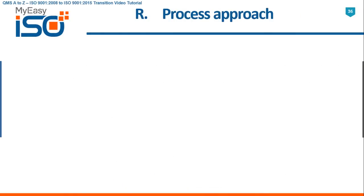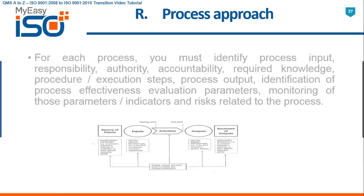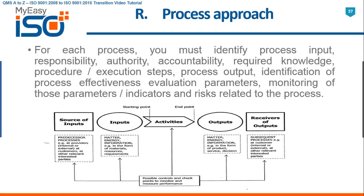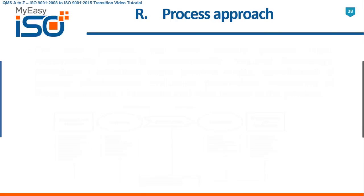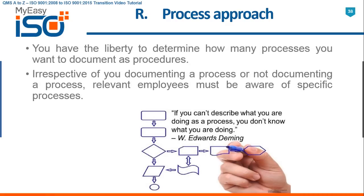R. Process Approach. Ensure you implement process approach effectively. In ISO 9001 2015 QMS, process-based management gets more prominence with the identification of processes in the organization. For each process, you must identify process input, responsibility, authority, accountability, required knowledge, procedure, execution steps, process output, identification of process effectiveness evaluation parameters, monitoring of those parameters, indicators, and risks related to the process. You have the liberty to determine how many processes you want to document as procedures. Irrespective of whether you document a process or not, relevant employees must be aware of specific processes. There is greater emphasis on the achievement of the desired outcome for enhanced customer satisfaction.